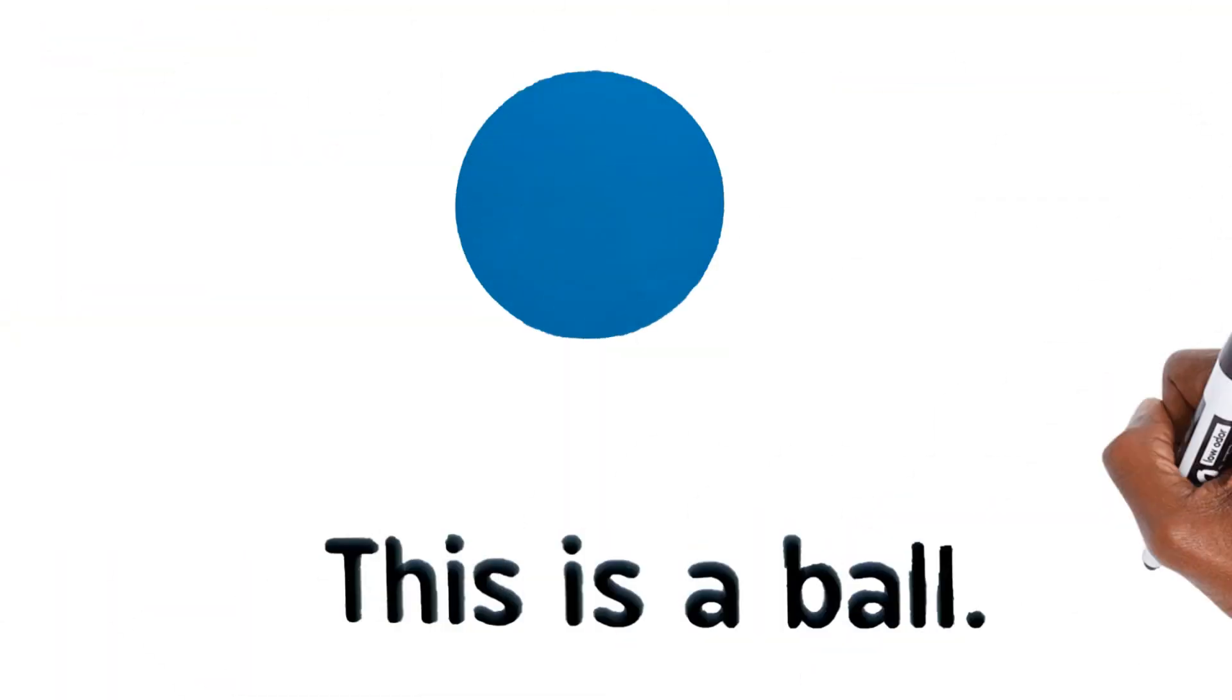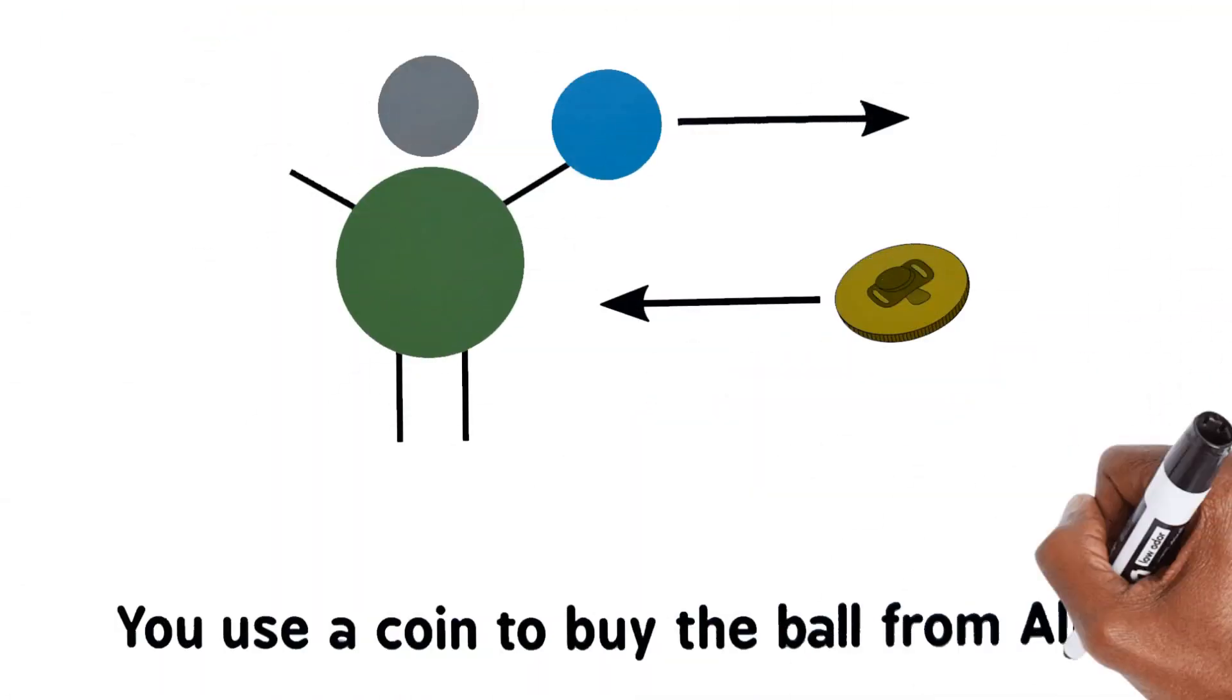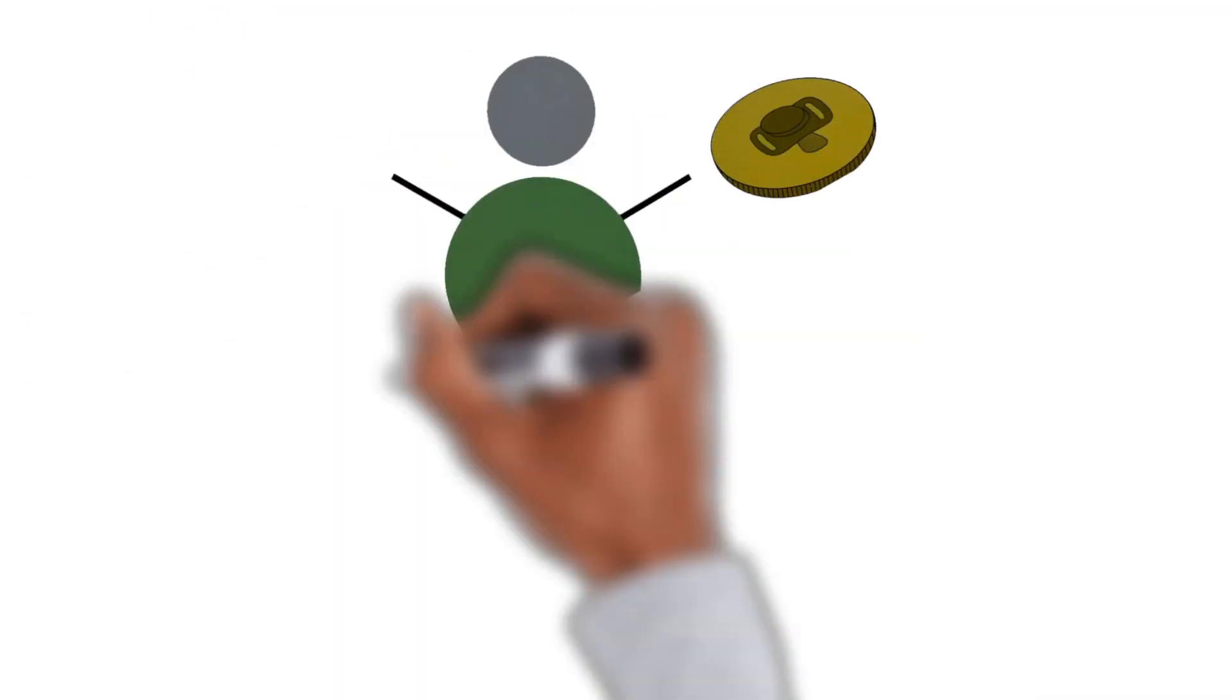This is a ball. You use a coin to buy the ball from Alice. Everyone can see Alice has the coin now.